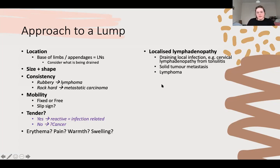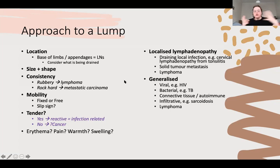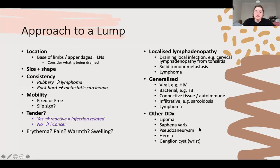Solid tumour metastasis and lymphoma differ based on consistency. Generalised lymphadenopathy is going to be infections or conditions affecting all of your body. Lymphoma can present early in just one section and spread to other lymph nodes. HIV and TB are good ones to think of if someone presents with widespread lymphadenopathy. Other differentials include lipoma with your slip sign, saphenovarix (varicose veins in the femoral region), pseudoaneurysm after a cath lab visit (should be pulsatile), and femoral hernia.